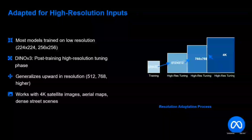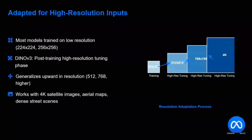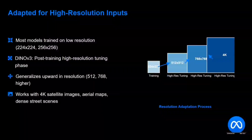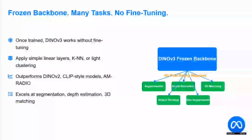DINOv3 is adaptable for high-resolution input — that's the best part. Most models are trained on low-resolution images like 224 or 256, but DINOv3 is trained on everything. It can generalize up to high resolutions like 512, 768, and can even work with 4K satellite images. With its frozen backbone, no fine-tuning is required. One model — DINOv3 can work directly for any task, be it segmentation, video tracking, and more. Just apply simple linear layers, KNN, or light clustering, and it outperforms other models.